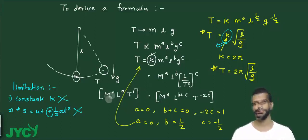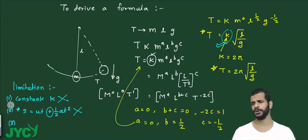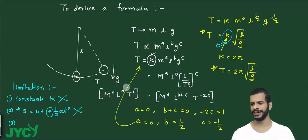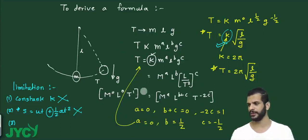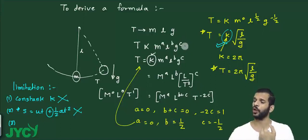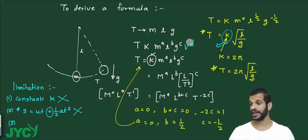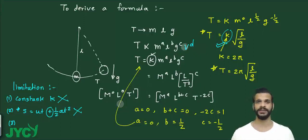There is another limitation — the third one, which is a bit harder to understand. In MLT form there are three basic dimensions, so the maximum number of equations we can get is three. If the quantity depends on four unknowns — say mass, length, gravity, and volume, giving powers a, b, c, d — that's four unknowns but only three equations. It's not possible to solve it. So if more than three unknown powers are involved, dimensional analysis cannot derive the formula.